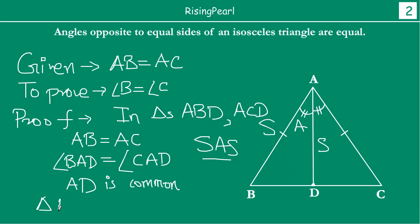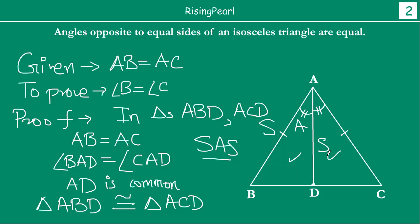Therefore, triangle ABD is congruent to triangle ACD. Since these two triangles are congruent, their corresponding angles are equal and corresponding sides are equal. From there, we get that angle B is equal to angle C. And this is how we prove that in isosceles triangle ABC, the angles which are opposite to equal sides are equal.